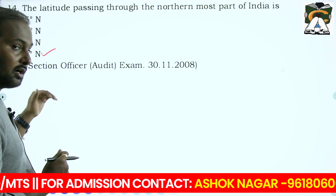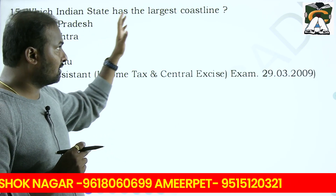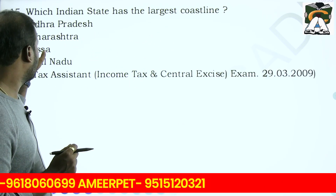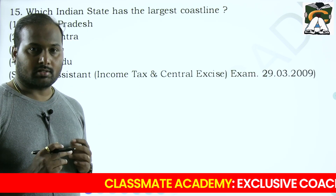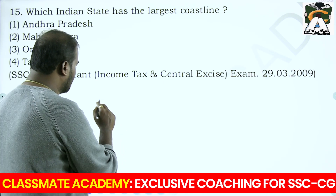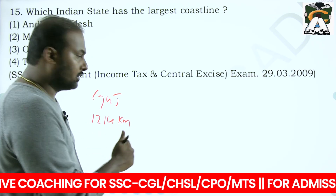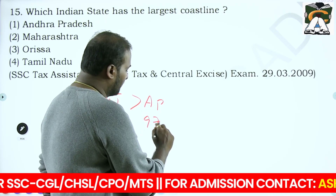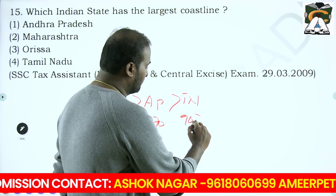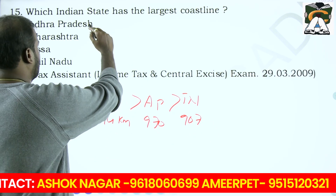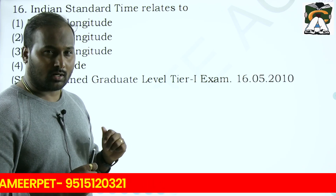'Which Indian state has the largest coastline?' The options are Andhra Pradesh, Maharashtra, Orissa and Tamil Nadu. Remember the top coastal states: Gujarat has the longest coastline at 1,214 km. After Gujarat is Andhra Pradesh at 970 km. After Andhra Pradesh is Tamil Nadu at around 907 km. Within the given options, Andhra Pradesh is present, so the answer is Andhra Pradesh.